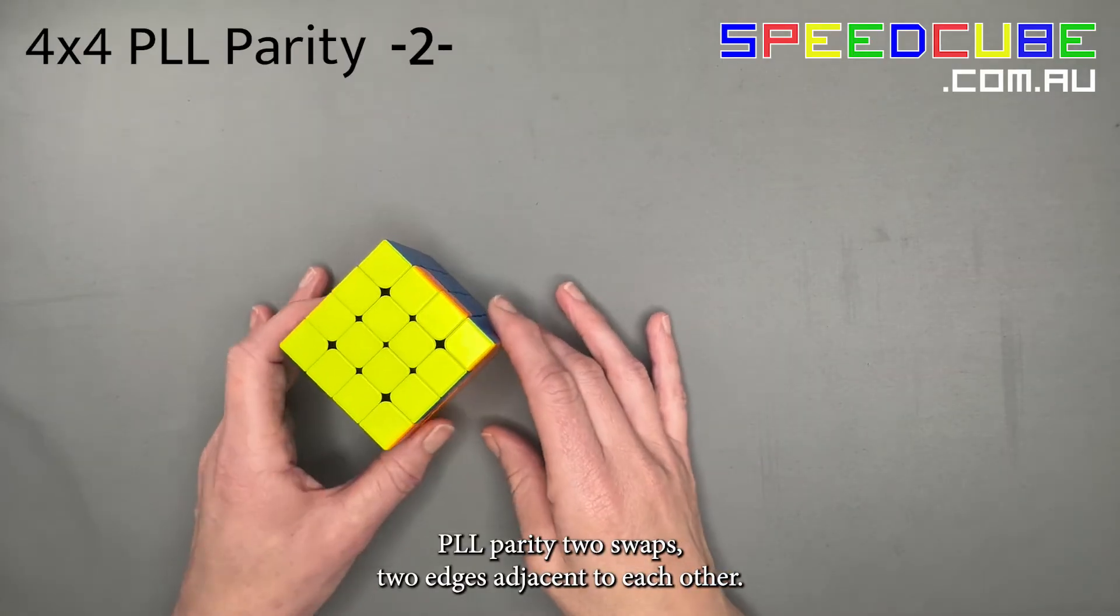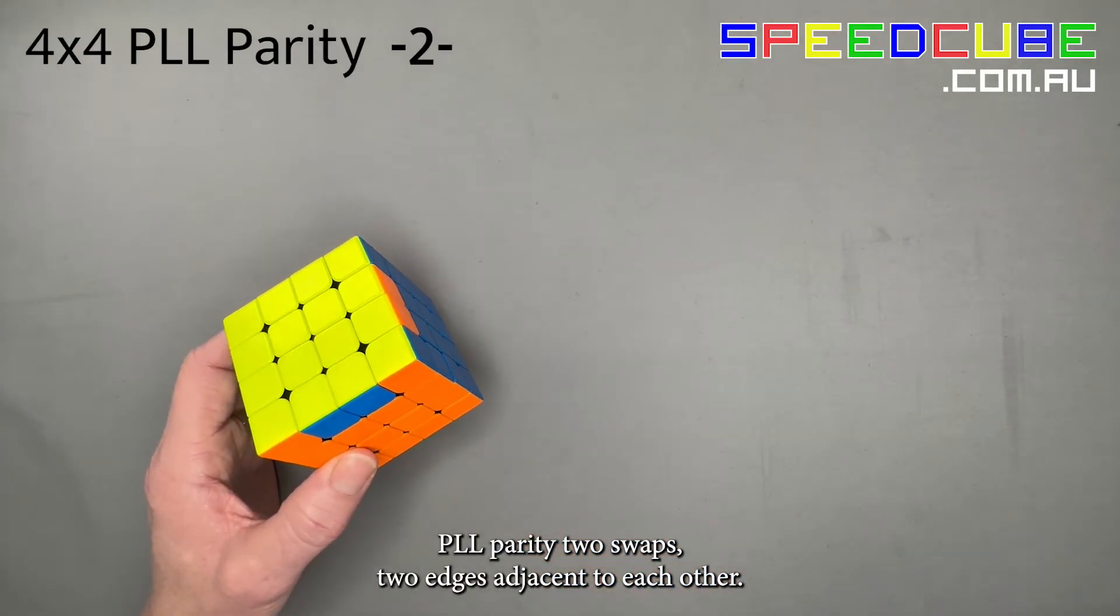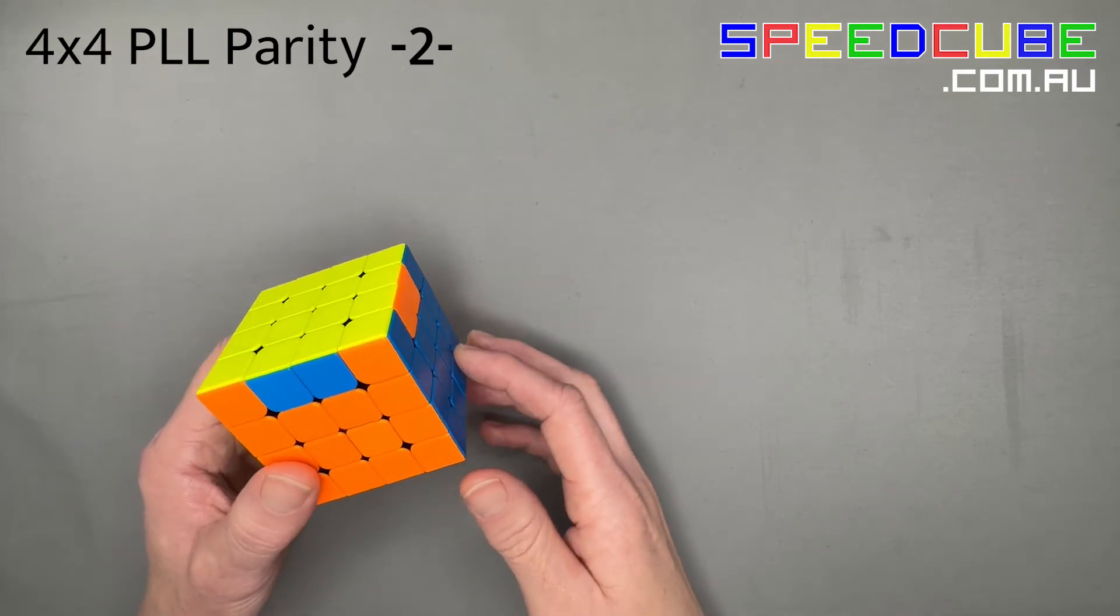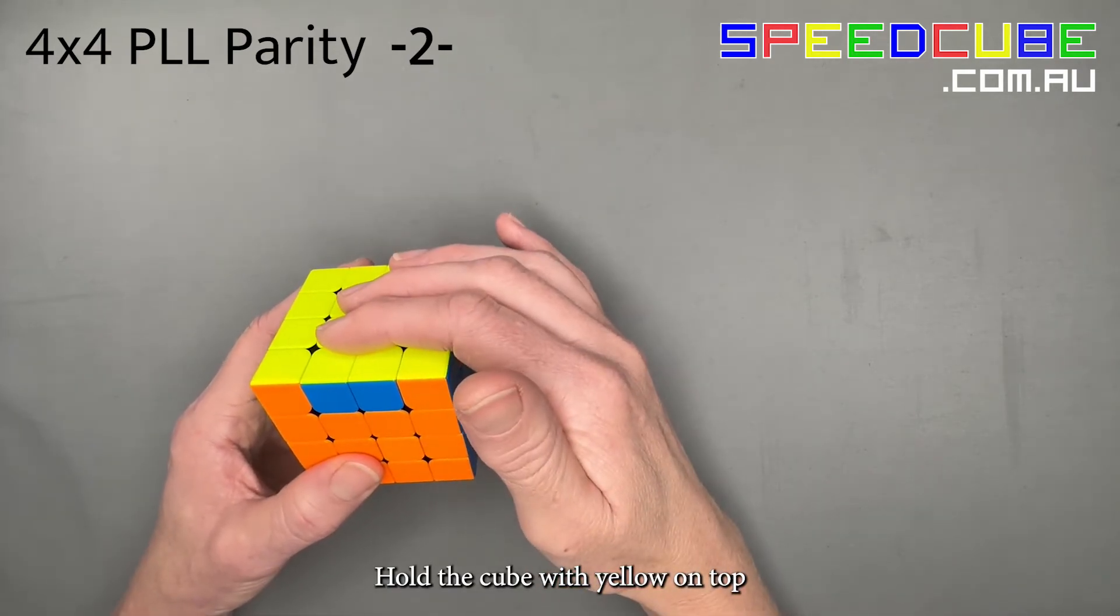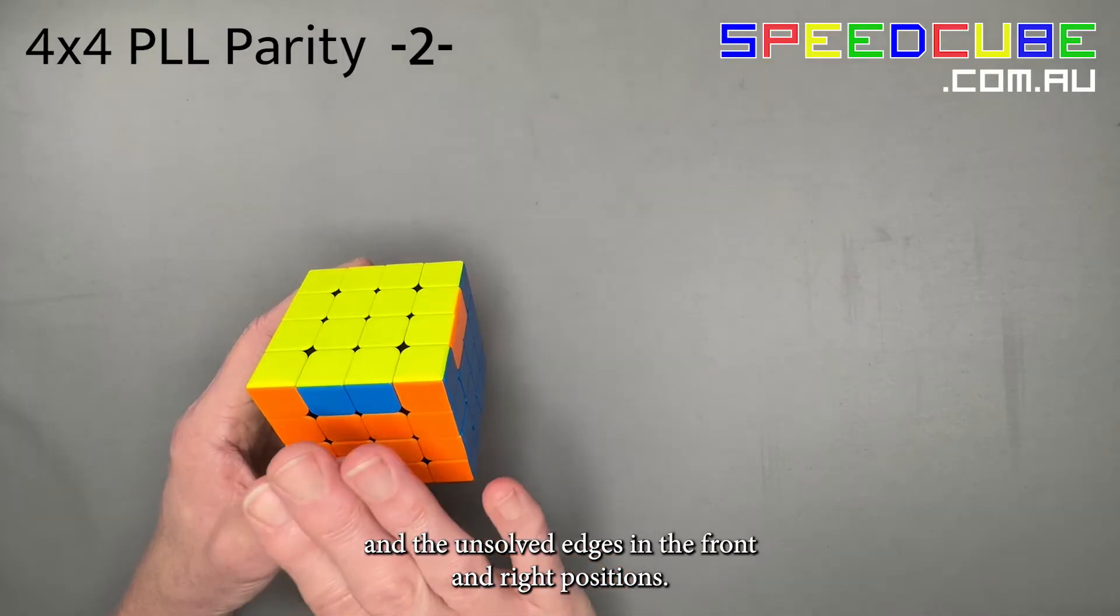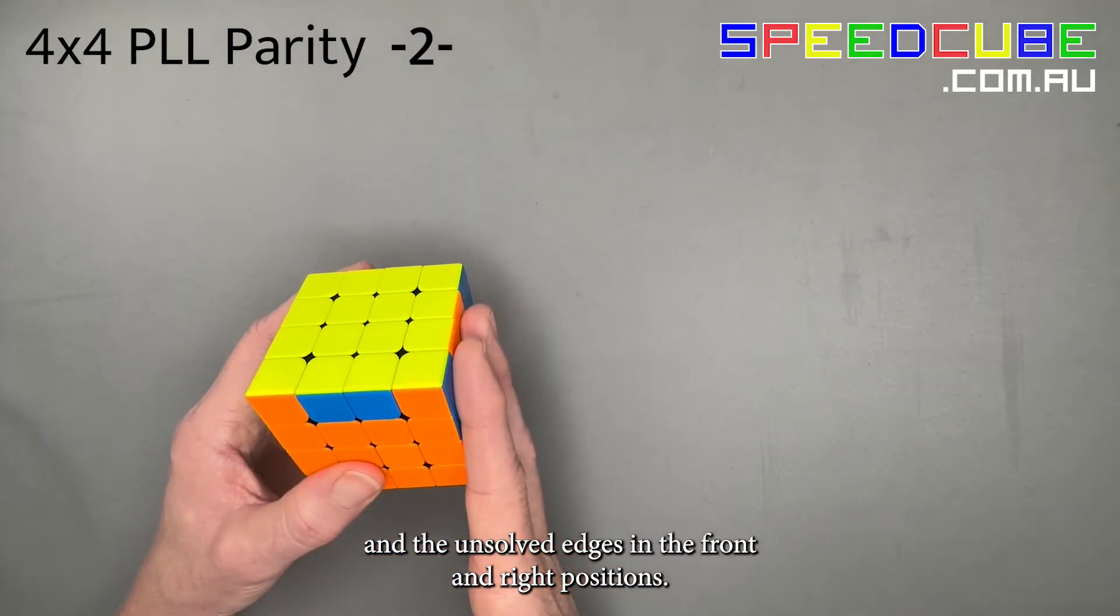PLL parity 2 swaps two edges adjacent to each other. Hold the cube with yellow on top and the unsolved edges in the front and right positions.